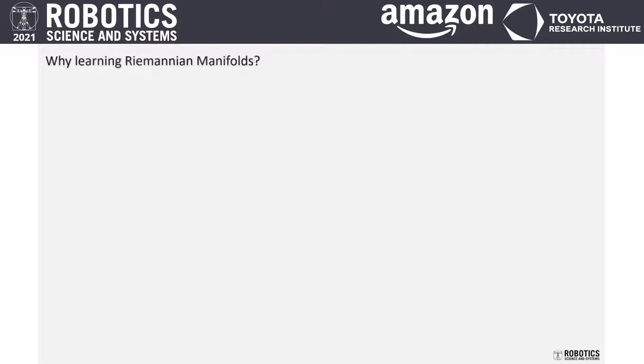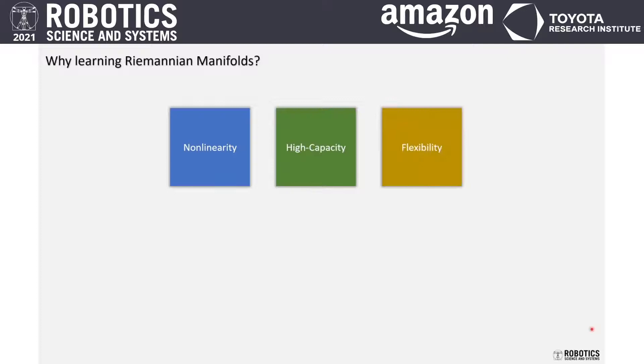But why Riemannian geometry? The main reasons are they are very powerful tools for modeling the nonlinearity of the data. They have a high capacity to learn and reconstruct the underlying patterns in the robot motion data. And finally, the flexibility of the formulation gives freedom for considering changes in the environment like obstacle avoidance on the fly.